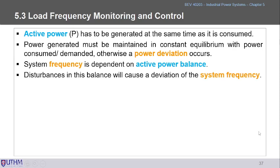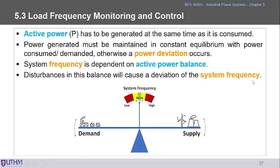This diagram shows a 50 Hz system frequency. We have the demand — the power consumed in the plant — and the supply, which can be from the utility company or your own generation such as solar or diesel.